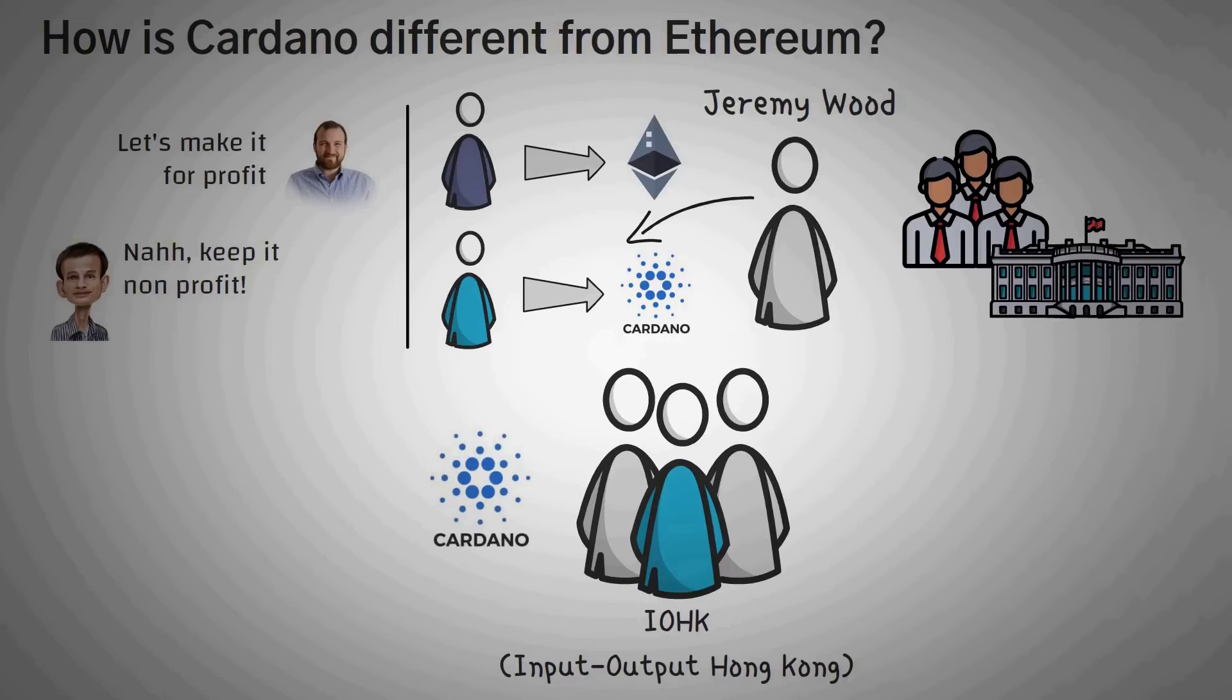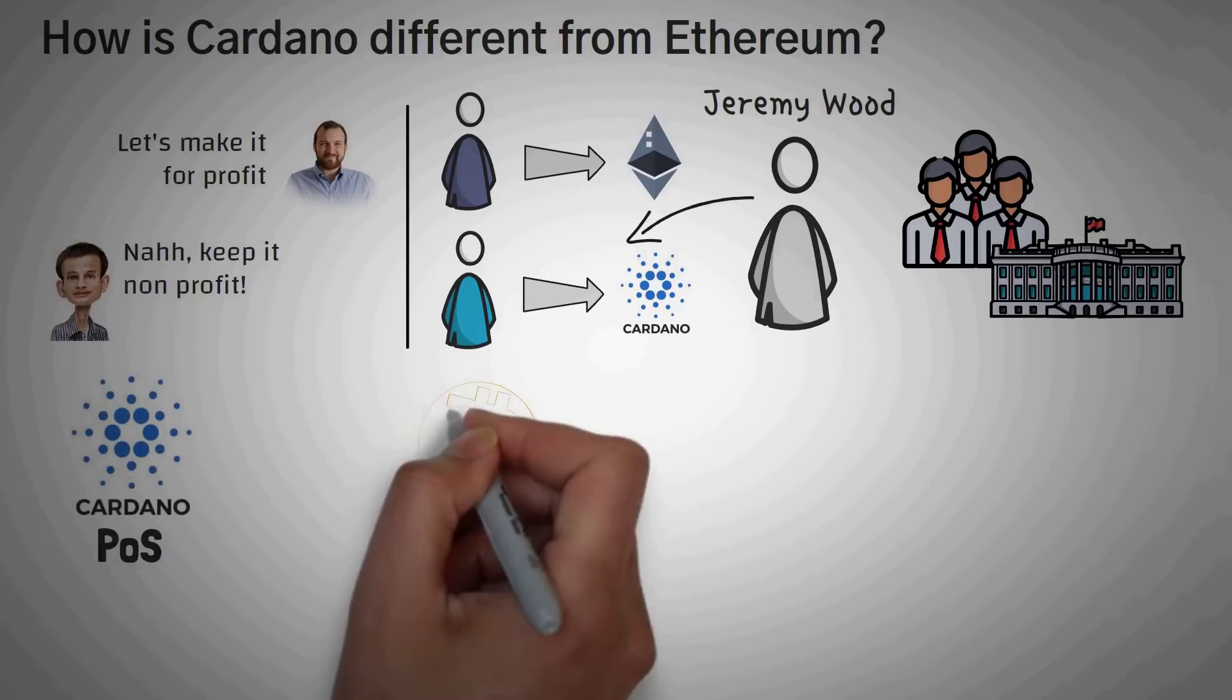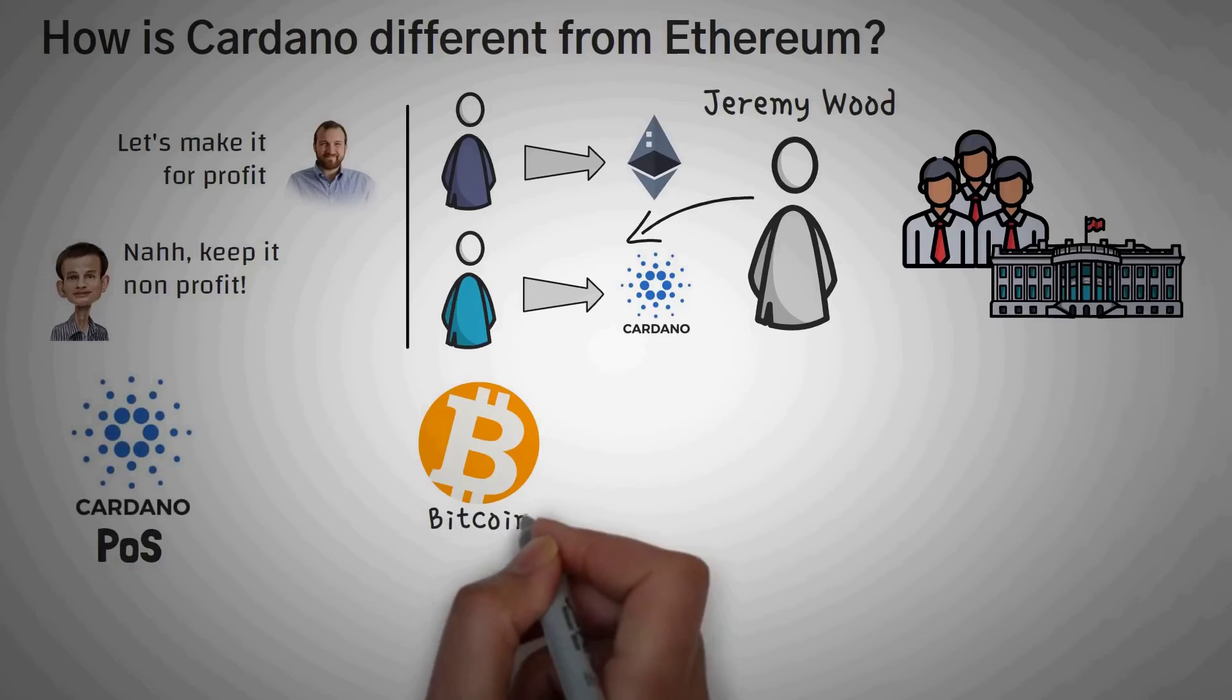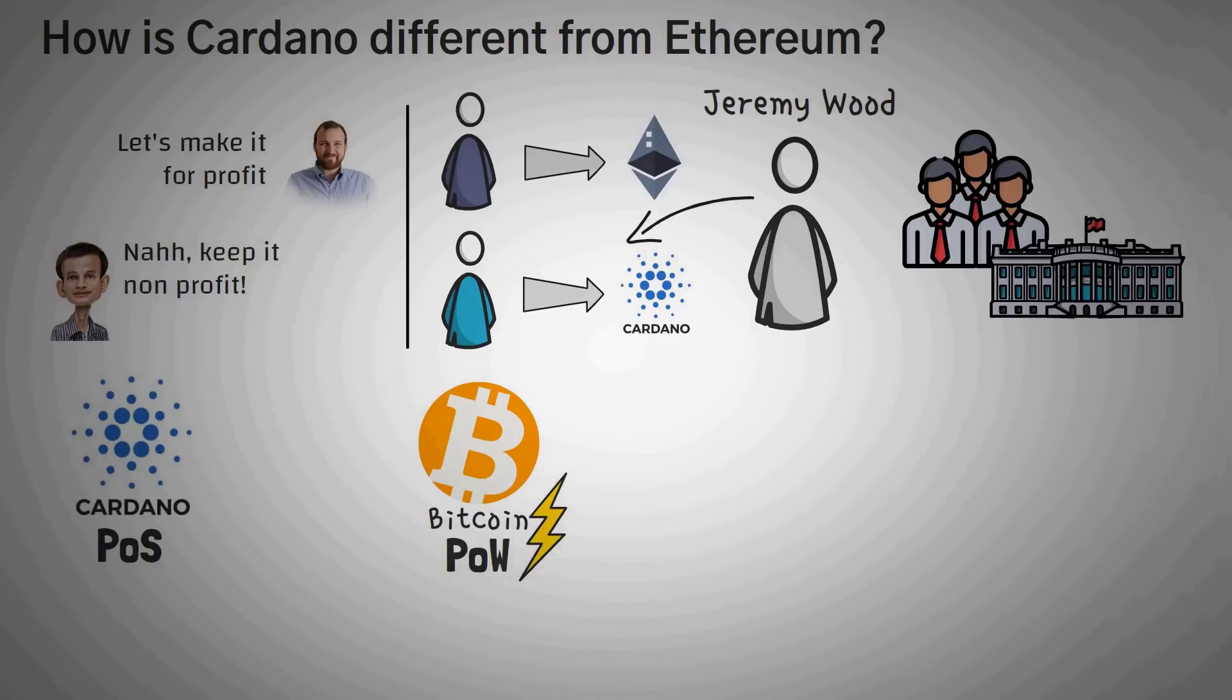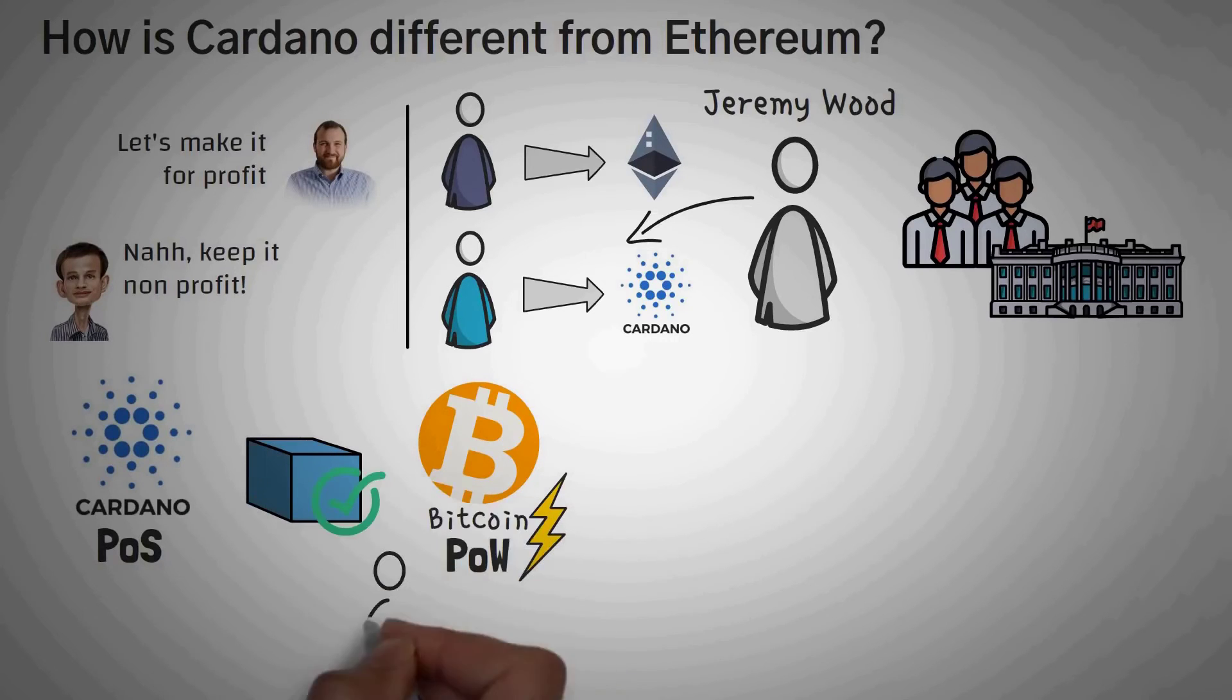Although Ethereum and Cardano are both smart contract platforms, they do differ in several ways. The first is that Cardano has been a proof-of-stake blockchain from the beginning. This means that instead of Bitcoin's method of doing really hard math problems to mine coins, they validate transactions according to how many tokens the validators stake. So for example, if you own a lot of ADA, you can stake that ADA and have more power in the network than those who have little ADA.